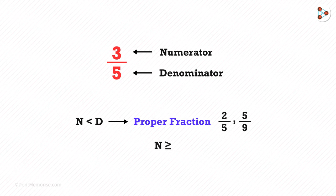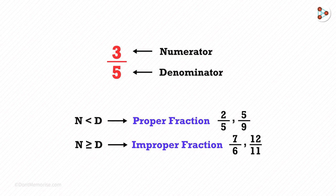When the numerator is greater than or equal to the denominator, it is called an improper fraction. Examples are 7 over 6 or 12 over 11.